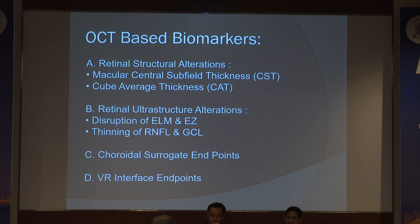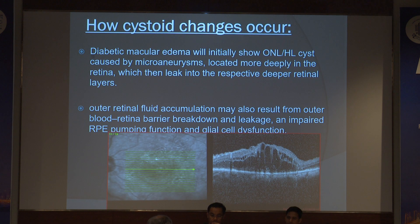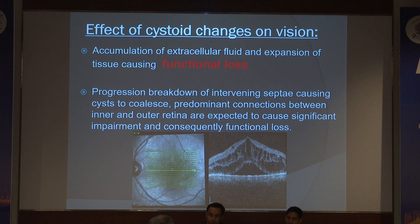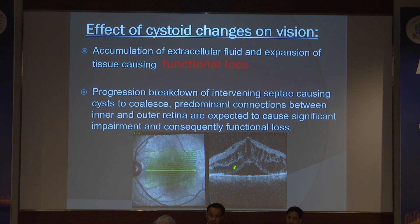There are various OCT-based markers. How can cystoid changes occur in DME? DME will initially show outer nuclear layer and Henle's layer cysts caused by microvascular abnormalities located more deeply in the retina. Outer retinal fluid accumulation may also result from blood-retinal barrier breakdown. Because of the accumulation of extracellular fluid and expansion of the tissue mainly causing functional loss, and progressive breakdown of the intervening septa causing cysts to coalesce, the connection between the inner and outer retina is lost, leading to significant functional impairment.